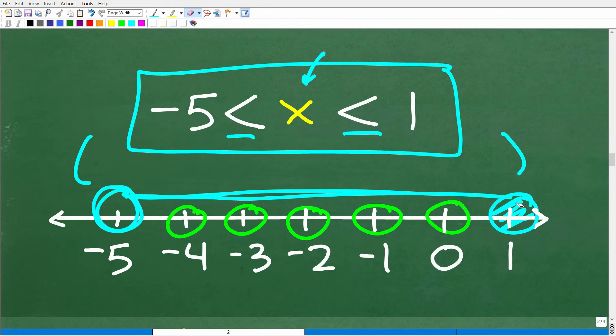In other words, 1 and negative 5 are not part of the solution. If this was less than or equal to and less than or equal to over here, then I would simply fill in these circles.